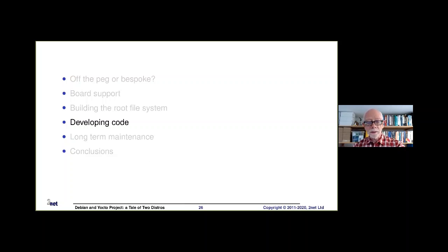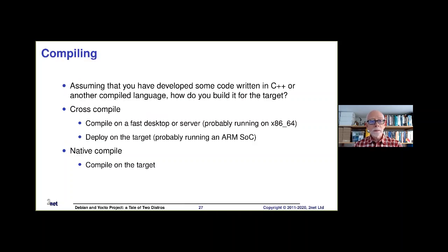The next topic is developing code — how are we going to compile code for the specific board we're using, and how are we going to put it onto that board? At the top level this is really a comparison between cross-compiling and native compiling. Cross-compiling is the traditional embedded way of doing things: you compile on a fast machine, usually your desktop or a server (probably Intel-based), and deploy on the target, which most likely is running an ARM SoC. You get the best of both worlds — a fast compile environment, and you deploy the final binaries on the target.